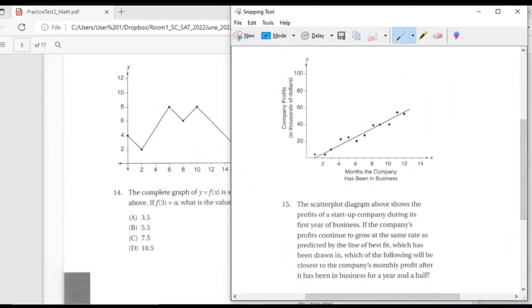15. The scatter plot diagram above shows the profits of a startup company during its first year of business. If the company's profits continue to grow at the same rate as predicted by the line of best fit, which has been drawn, which of the following will be closest to the company's monthly profit after it has been in business for a year and a half?